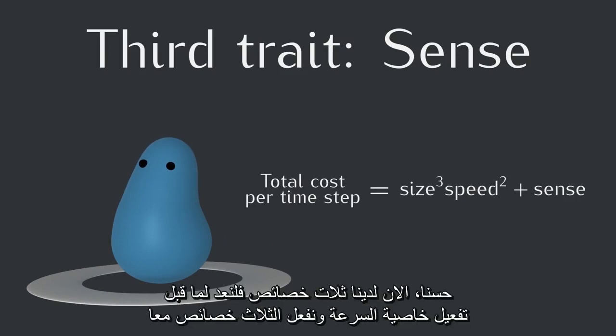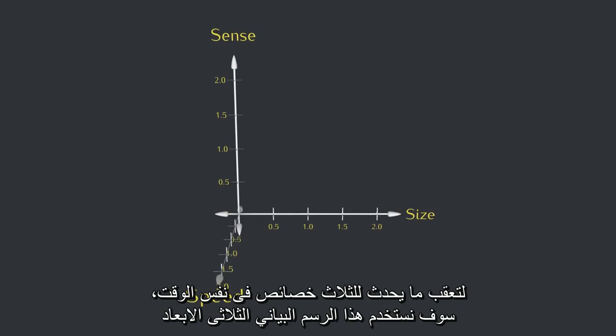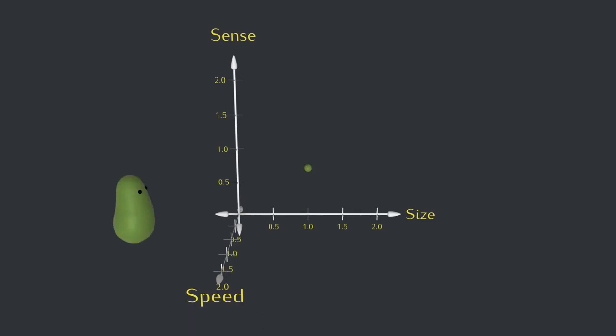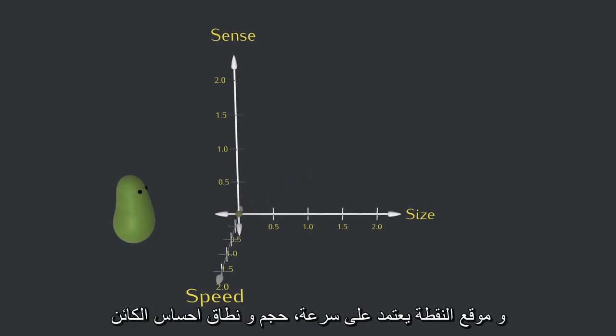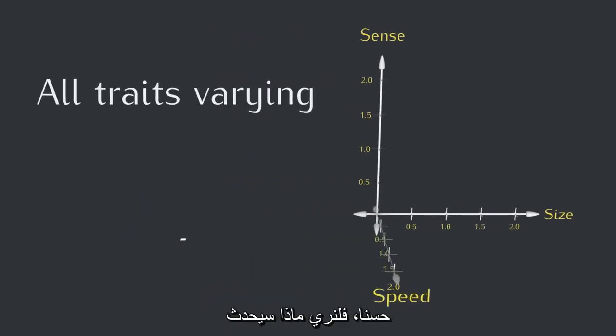Alright, so now that we have three traits, let's rewind to before we turned on speed mutations, and instead turn on mutations for all three traits. To keep track of what's happening to all three traits at once, we're going to use this three-dimensional graph. Each dot in the graph represents one creature, and the position of the dot depends on the speed, size, and sense values for that creature. Alright, let's see how it goes.